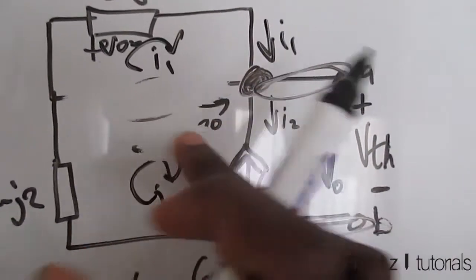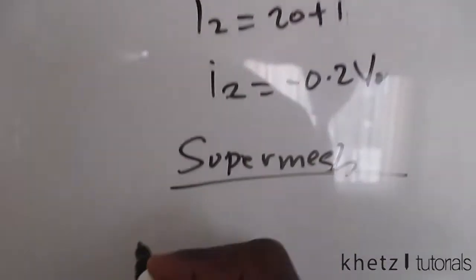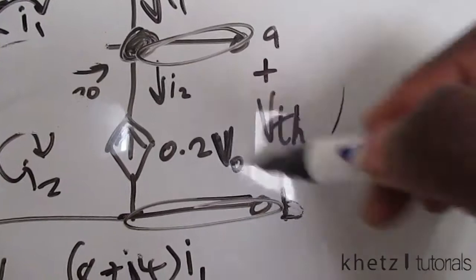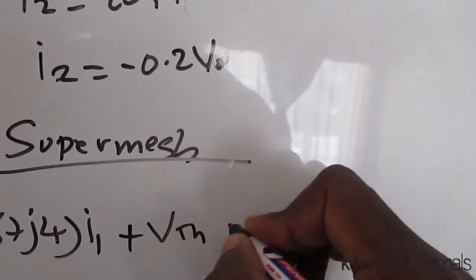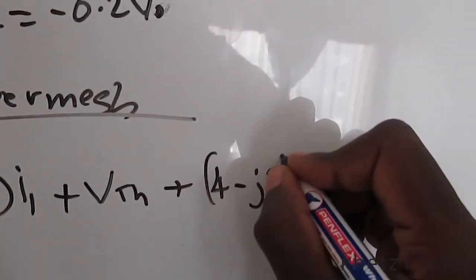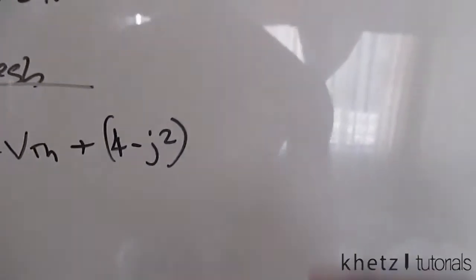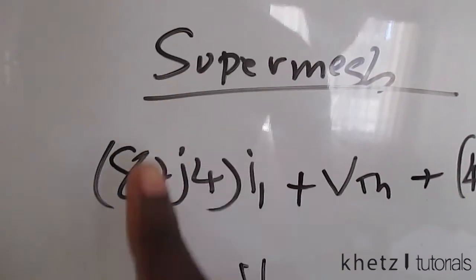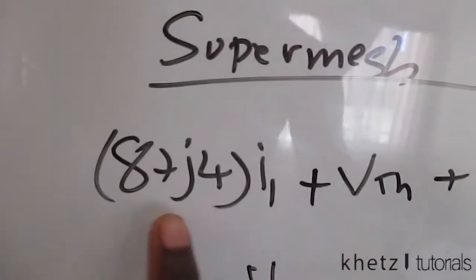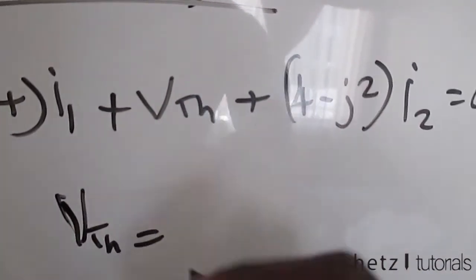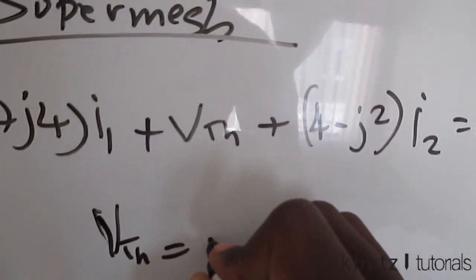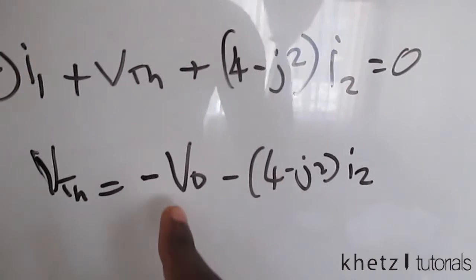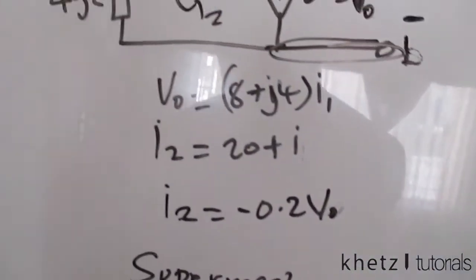Going around the super mesh: (8 + j4) × i1 + VTH + (4 − j2) × i2 = 0. VTH is in parallel with the current source, sharing two nodes. Rearranging: VTH = −VO − (4 − j2) × i2, which is −(8 + j4) × i1 − (4 − j2) × i2. We need to find i1 and i2 to evaluate this.